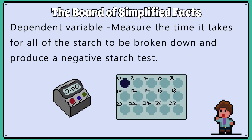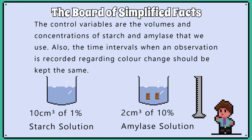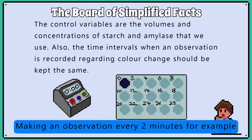Our dependent variable will be measuring the colour change of a starch test over time. The control variables are the volumes and concentrations of starch and amylase that we use. Also, the time intervals when an observation is recorded regarding colour change should be kept the same.